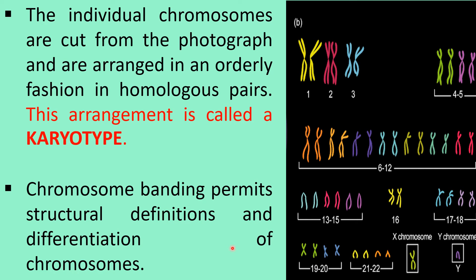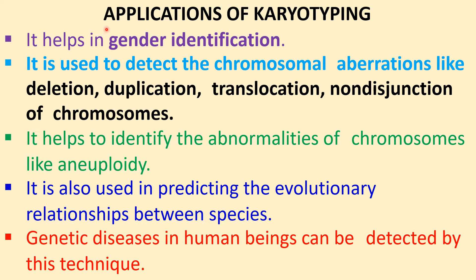The applications of karyotyping are very important. First, it helps in gender identification — identifying the sex of the child. It is used to detect chromosomal aberrations like deletion, duplication, translocation, and non-disjunction. It also helps identify chromosomal abnormalities like aneuploidy, predicts evolutionary relationships between species, and can detect genetic diseases in human beings.